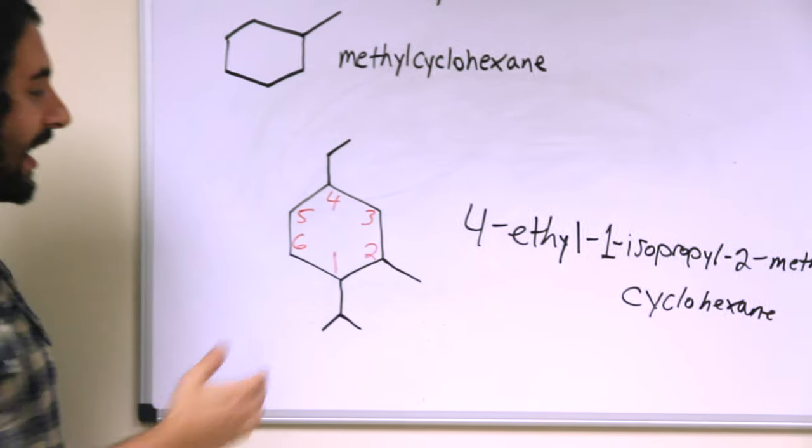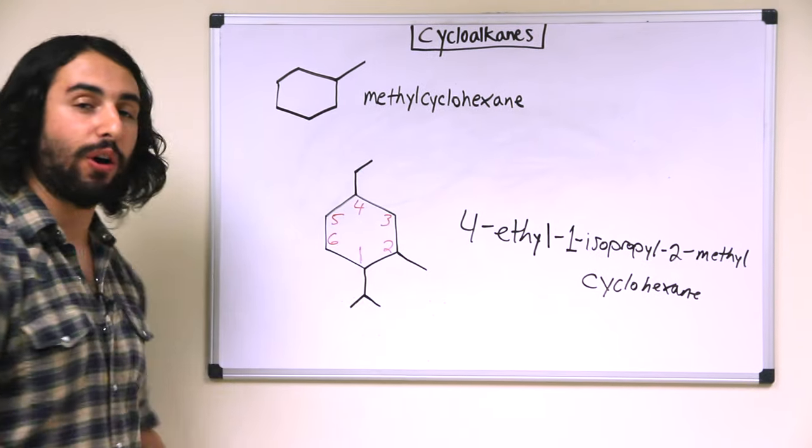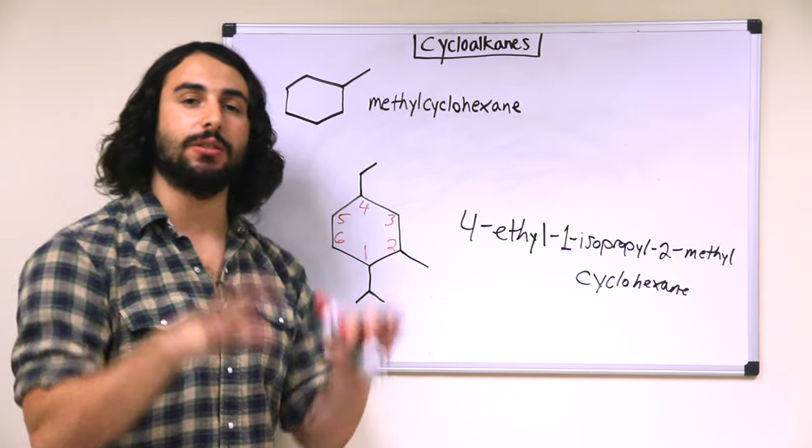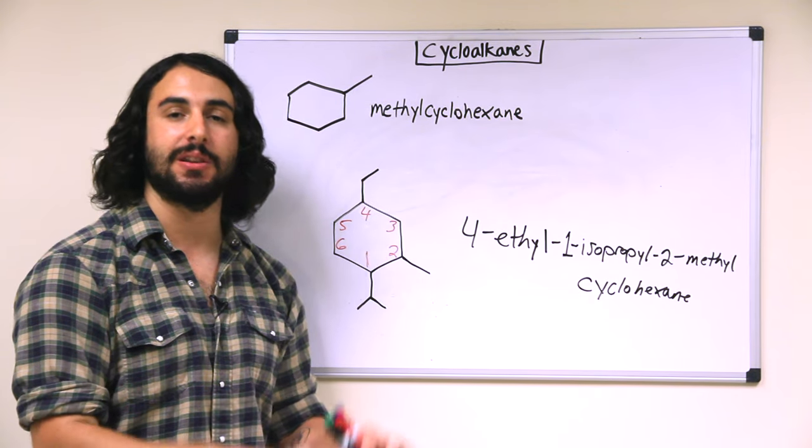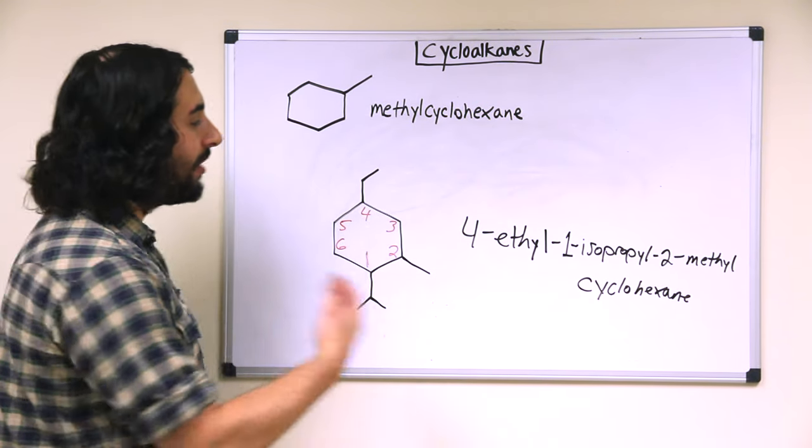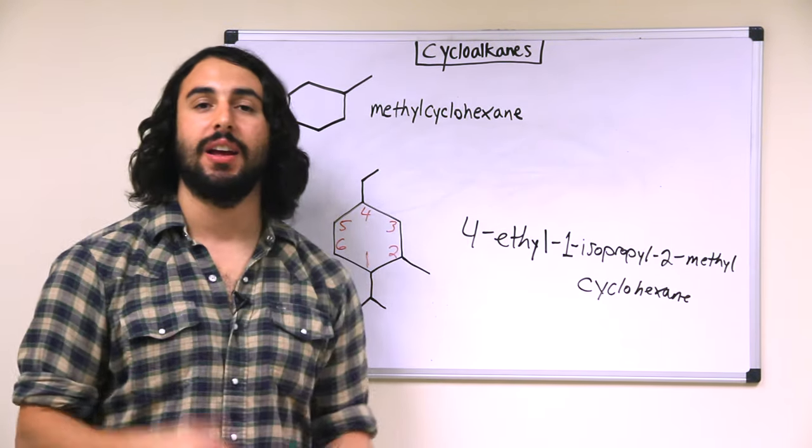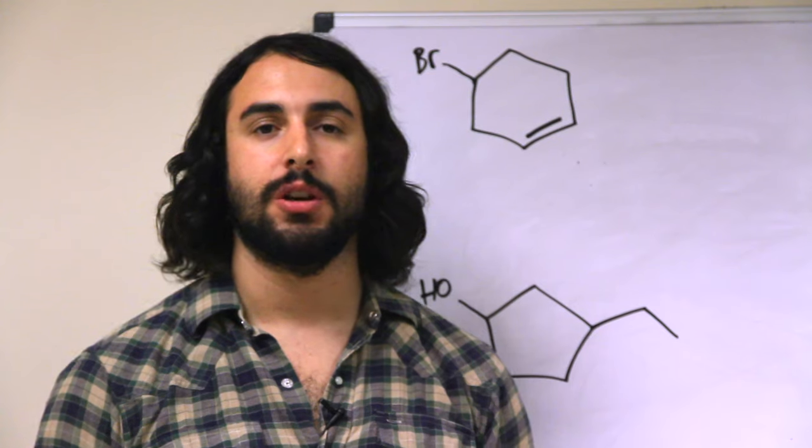cyclohexane. So once again we chose one, two, four as a numbering system because that is the lowest possible set of locants for those substituents, and then we simply list them alphabetically as we normally would. So we just looked